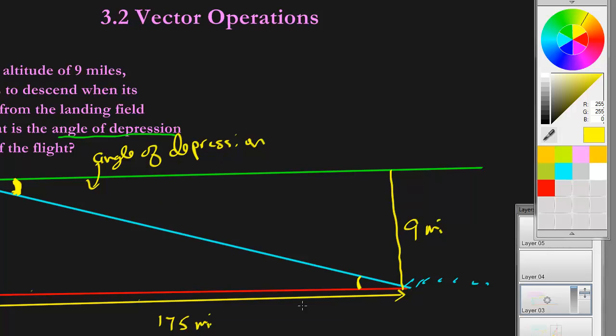You know, since this is kind of a rectangle now, you could call this green line 175 miles. But we need to find this angle. So let's say we used these two things. We would be using the opposite side from this angle. We'll call that angle theta again, Greek letter theta. The opposite side and the adjacent side, so it would be tangents.